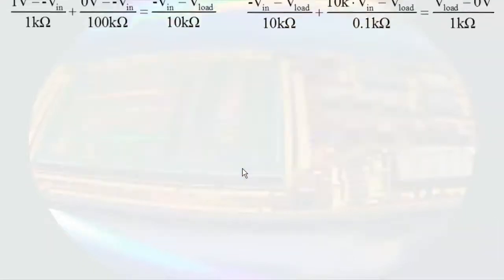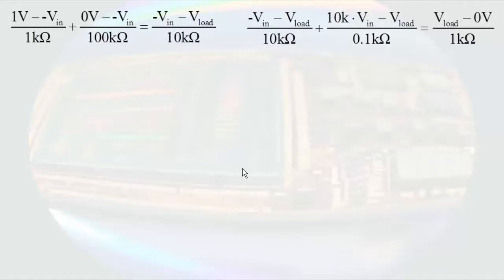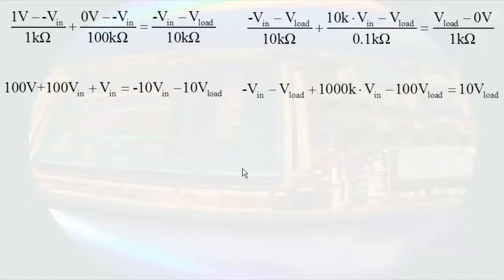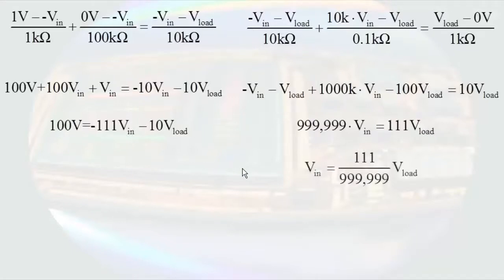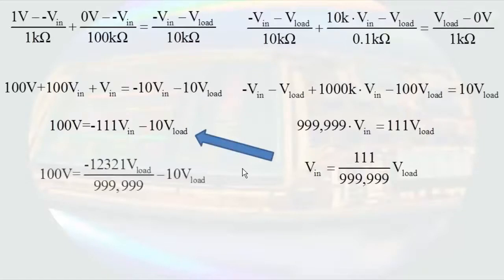With two equations and two unknowns, we can start with some algebra. We can multiply through the left-hand equation by 100 kOhms. The right-hand equation can be multiplied through by 10 kOhms. Combining terms results in the following two equations. Solving the right-hand equation for Vin, we can then substitute that value into the left-hand equation, resulting in this. If we solve for V-load, we find the output voltage is negative 9.98769 volts. And yes, those are way too many significant figures. Rounding to 0.1 volts gives negative 9.99 volts. And even this number probably has too many significant figures.